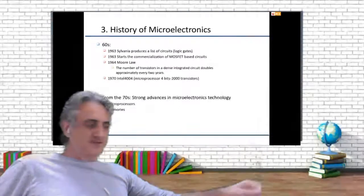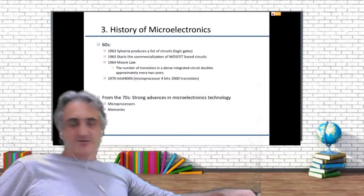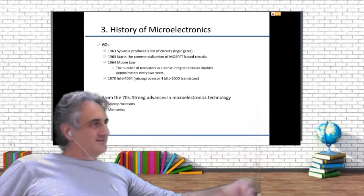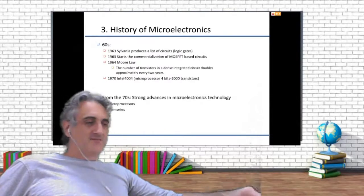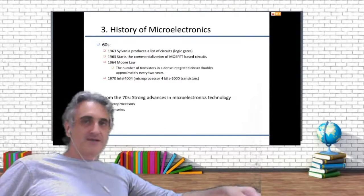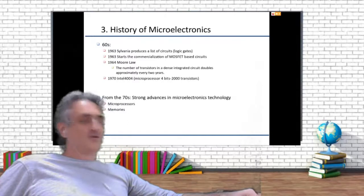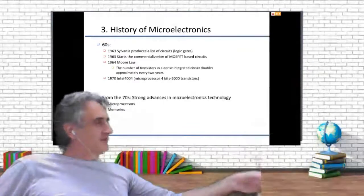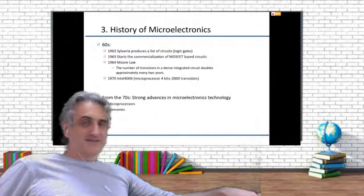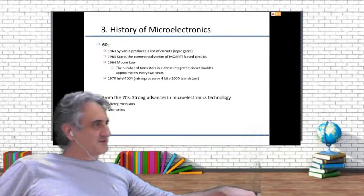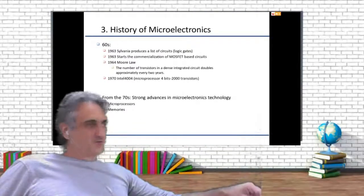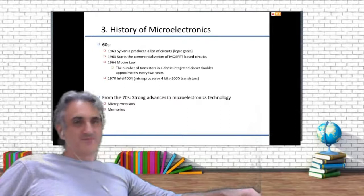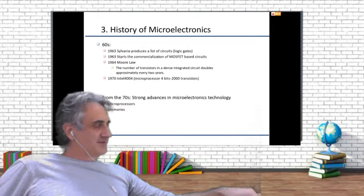He made an observation: for the same area, every two years we get twice the transistors. At that time they were occupied designing the first microprocessor — the Intel 4004, a microprocessor with 4 bits. Now we have 64 bits. But Gordon Moore's law still holds valid.